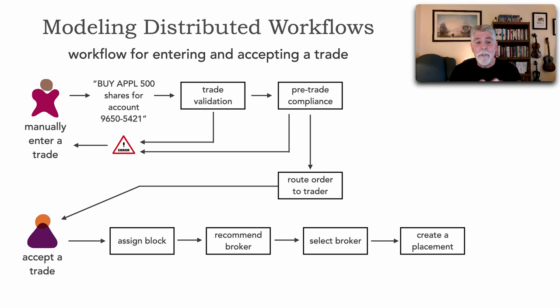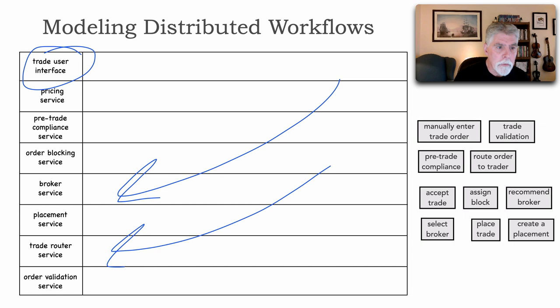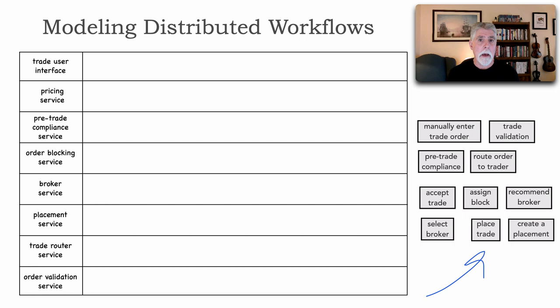So let's go back to our workflow, our business workflow model for entering and accepting a trade. The business automation model really starts with these rows. Each row represents a particular application or a particular service. So in our case, here's all of our various services that we have in our system, and notice everything starts with a trade user interface, and then we've got all of our services going down. Now, as you might guess—oh, and over here by the way are all of our workflow steps for this particular workflow of entering and accepting a trade.